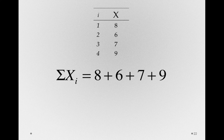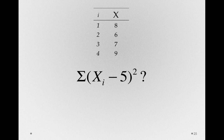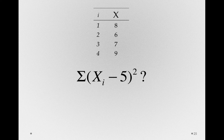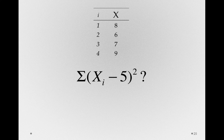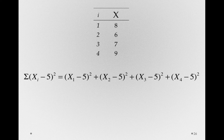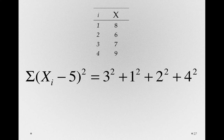Now, notice with this i notation, we can be specific. We can say, take the sum of each individual x i minus 5, and then square that. Now, note that the square actually refers to what's happening in the parentheses. So, this gets written out as x1 minus 5 squared, x2 minus 5 squared, and so on. If we write this out, this is then just 3 squared plus 1 squared plus 2 squared plus 4 squared.